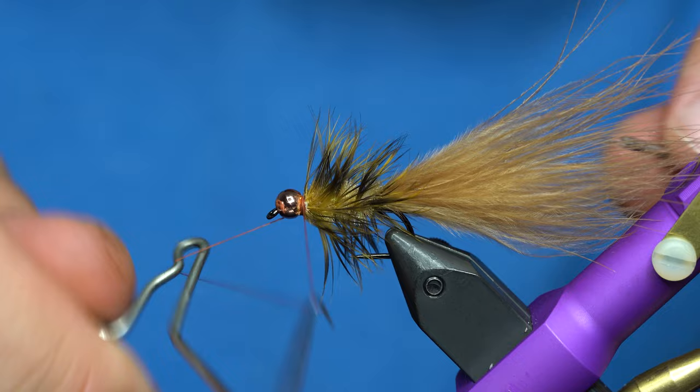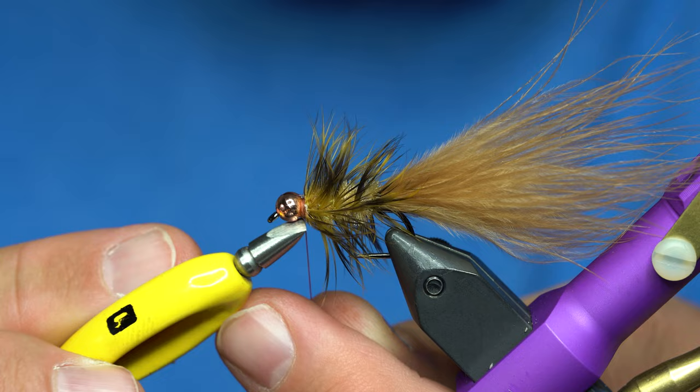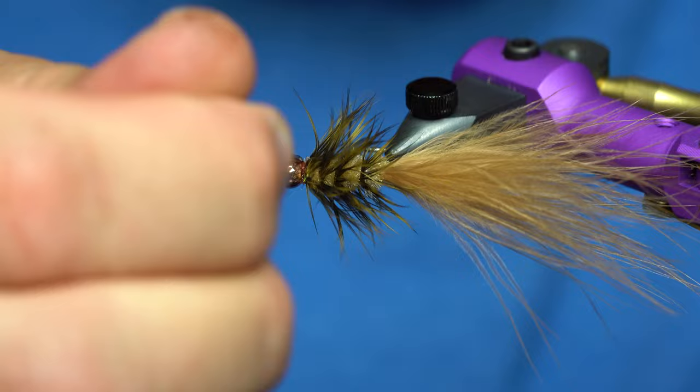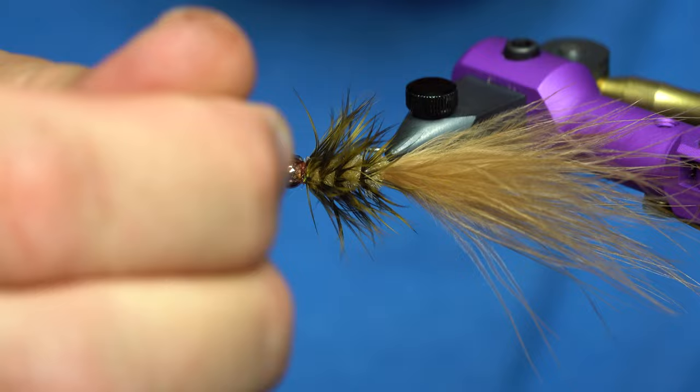All right, from here, we'll just whip finish this bad boy. Haven't used this for a while. You can just cut it. That is the Loon whip finisher with a little blade on the back side of it. Anyway, from here, I will head cement it. But yeah, fish that bad boy. It's going to dance like crazy in the water.